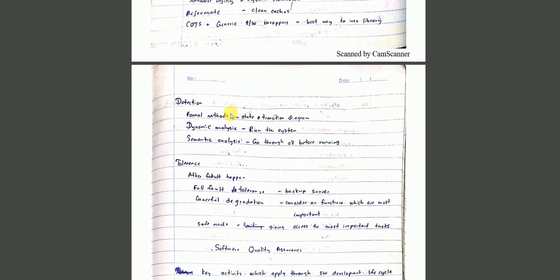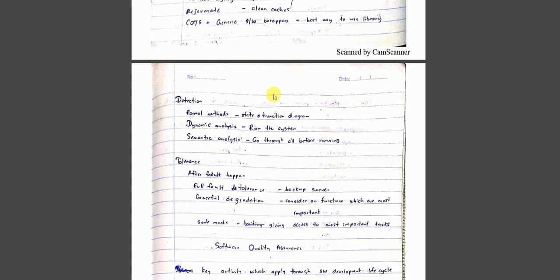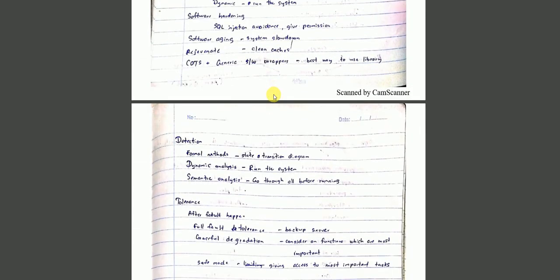For fault detection, we can use formal methods like state transition diagrams to model the system. Dynamic analysis runs the system to find faults during execution. Semantic scanning and code review help identify faults by examining the code.